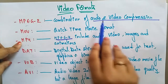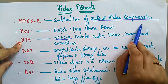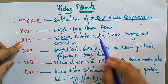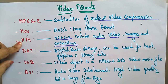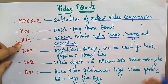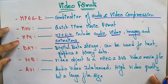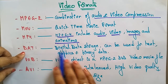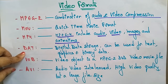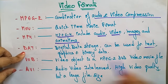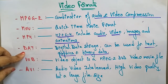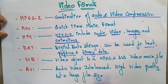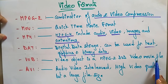MPEG4 supports audio, video, images, and animations. .DAT is digital data storage — it can be used for text, graphics, or binary data. Whenever you want to store information like text, graphics, or binary data in video files, you use the .dat extension. .VOB is a video object in MPEG2 DVD video movie files.